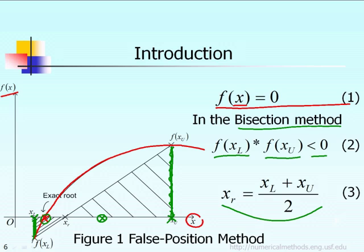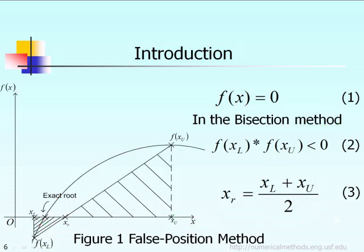In the false position method, instead of picking the midpoint, we connect the point at the function value at x-lower bound and the point at the function value at x-upper bound with a straight line. That straight line will intersect the horizontal x-axis at a new location, which will be the new predicted root. As you can see in this example, the newly predicted root xR using the false position method is a lot better than the midpoint predicted by the bisection method.